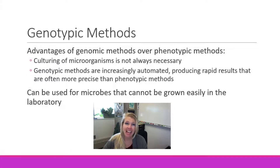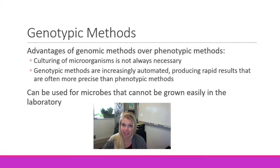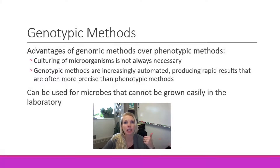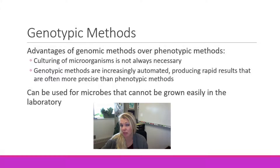Genotypic methods include anything that looks at the genome of the organism — whether we're looking for DNA or RNA. There are definite advantages to doing this genotypic work, also called molecular work. Number one, the organism doesn't have to be cultivated or growing. Sometimes organisms can't be grown in the lab, so genotypic typing is the only feasible method.